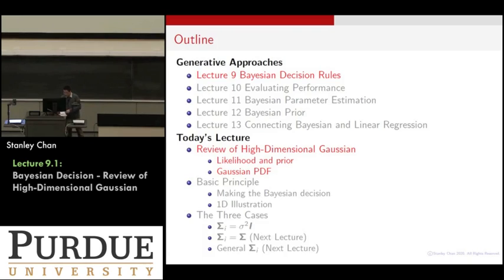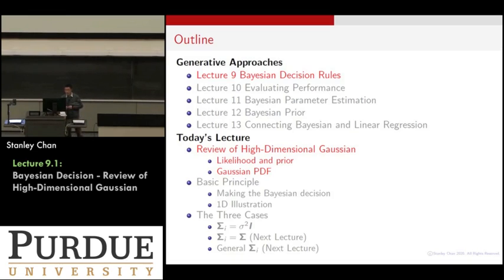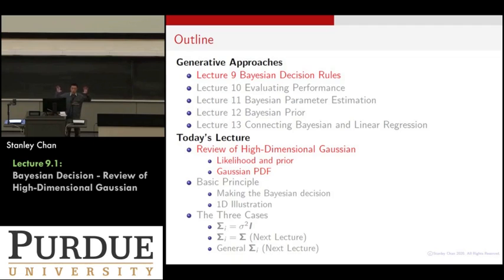Today we want to talk about Bayesian decision rules. There are three components: first, reviewing the basic ideas of high-dimensional Gaussians, including the notion of likelihood function and prior distribution. Then we'll discuss the meaning of the Gaussian PDF. Afterwards, we'll cover the basics of the Bayesian decision rule — how to use likelihood and prior to construct a decision boundary — illustrated with a 1D example. Finally, we'll jump into three cases of the Gaussian problem. The first case is where the two Gaussians share the same covariance matrix, and two additional cases will be covered in the next lecture.